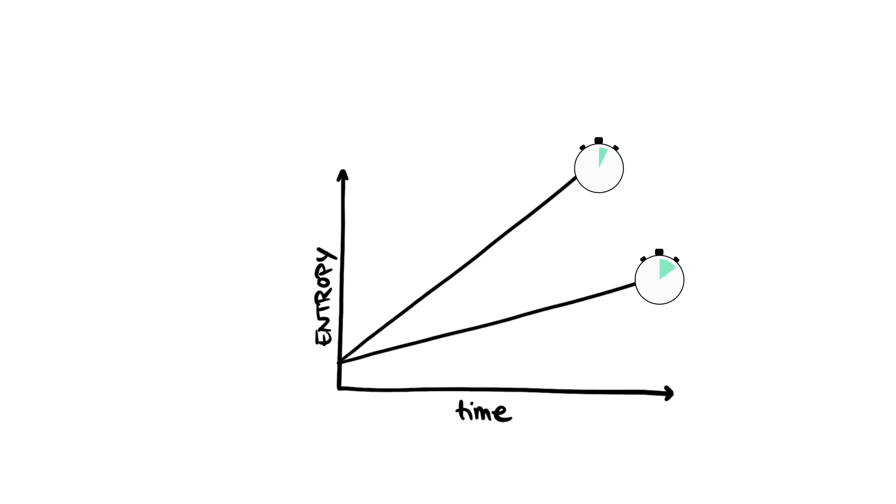The faster the entropy increases, the shorter it takes to guess the arrow of time. Physicists use the concept of entropy production rate to express how fast entropy is produced in a process.